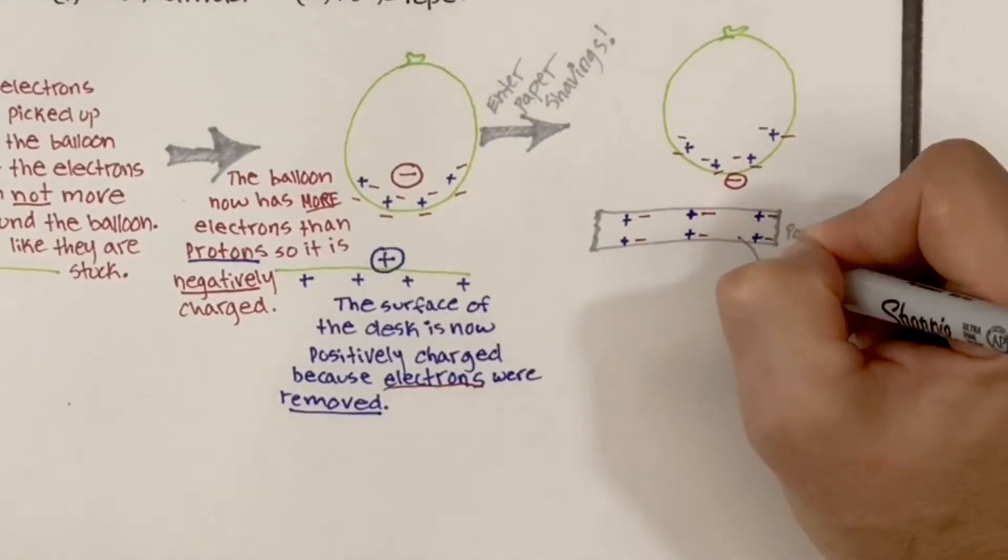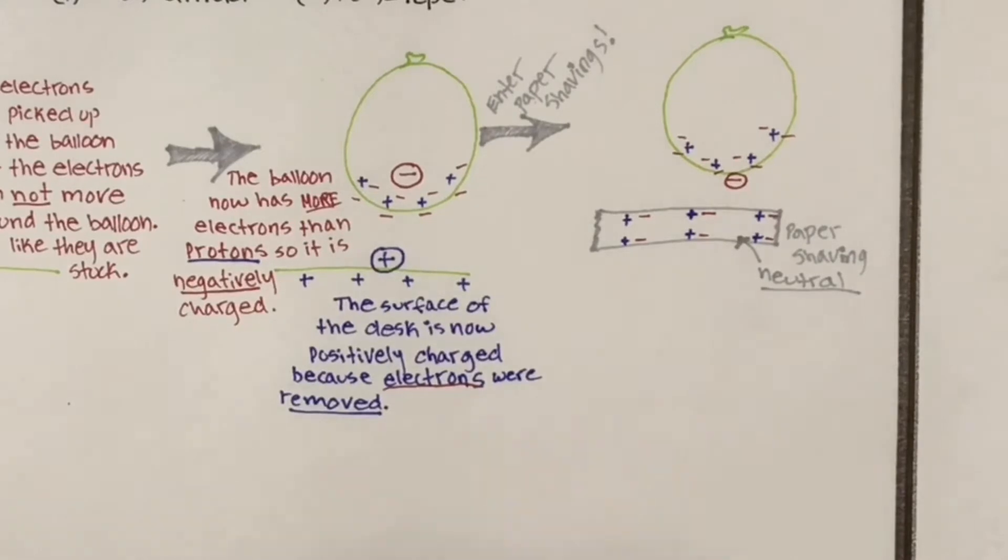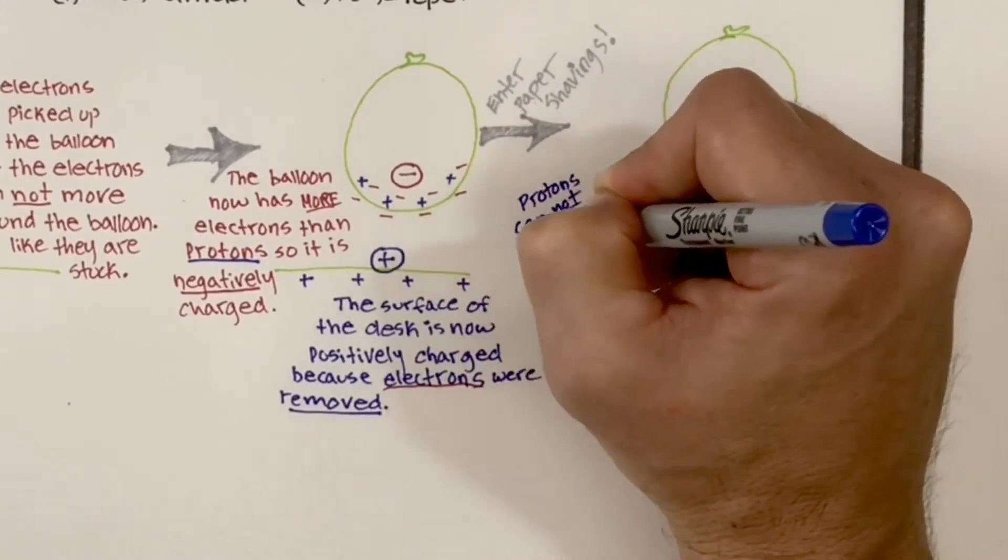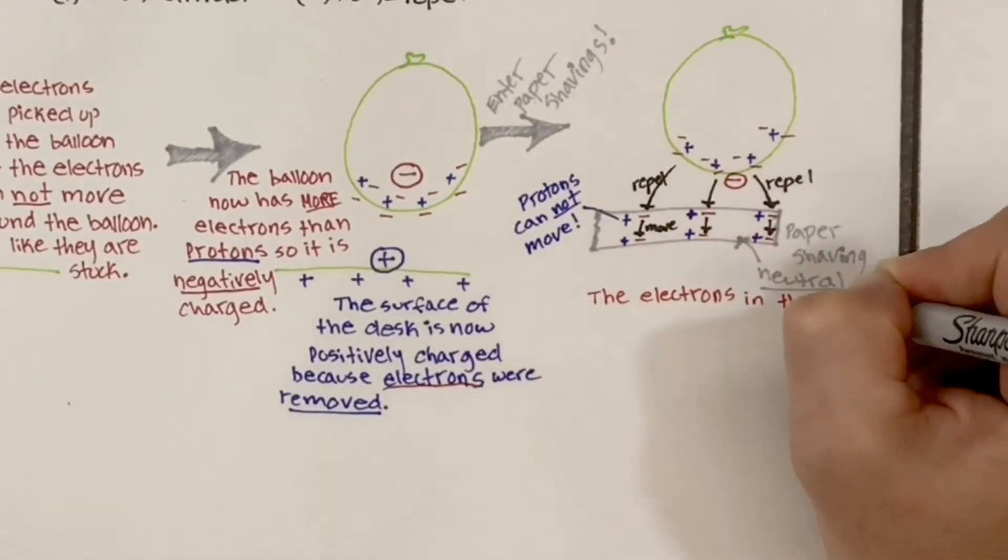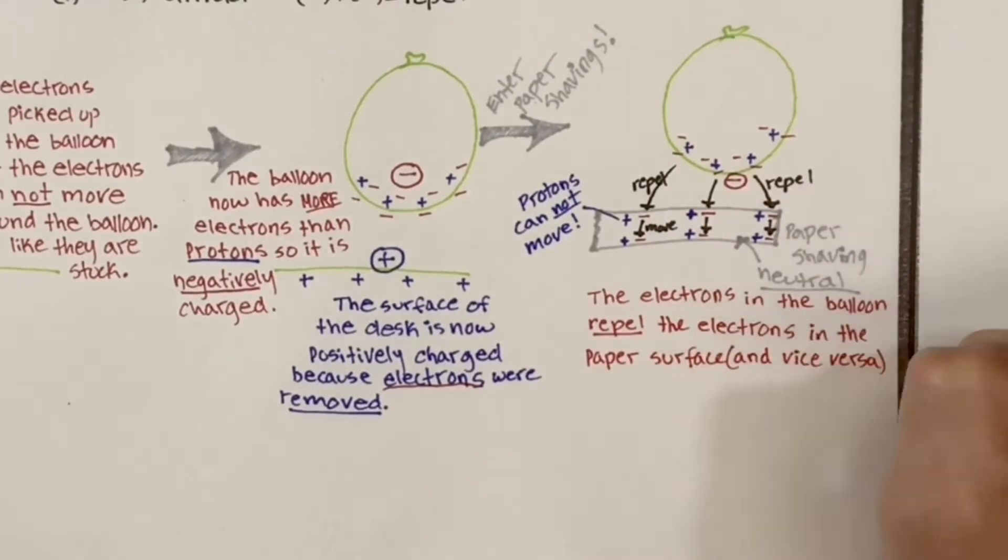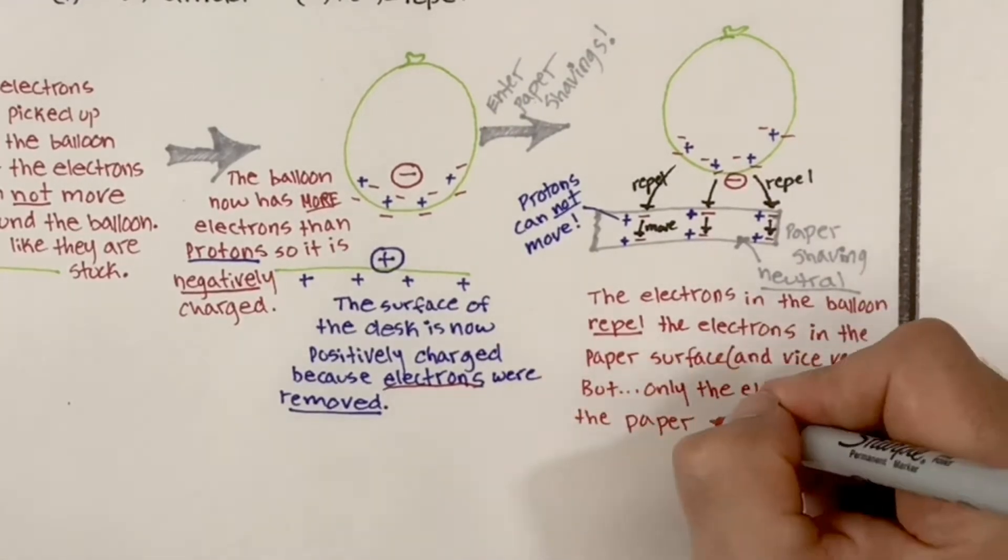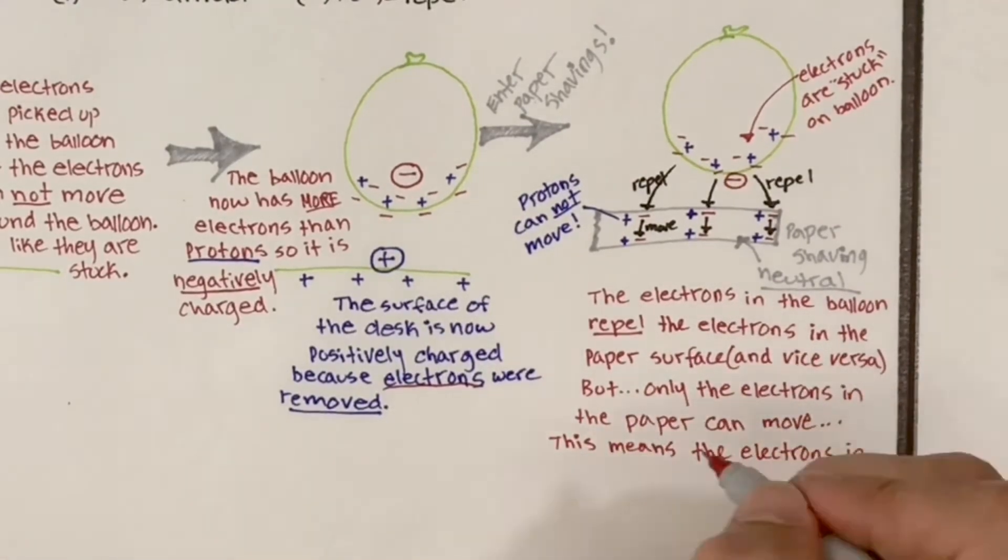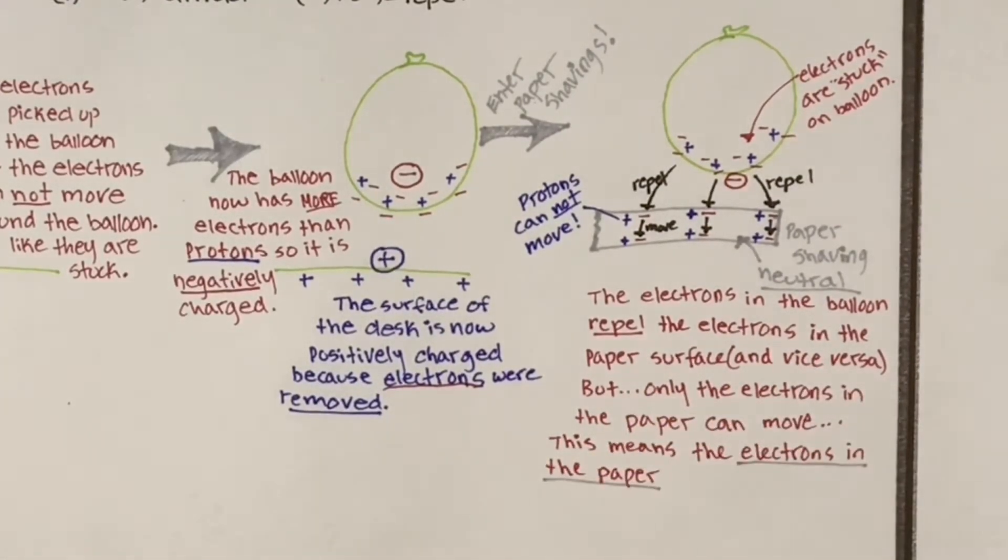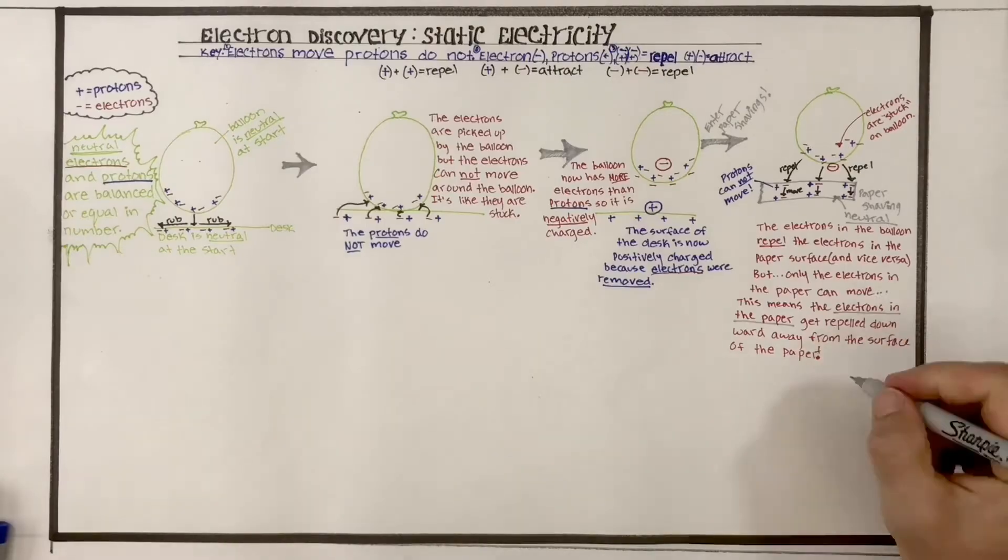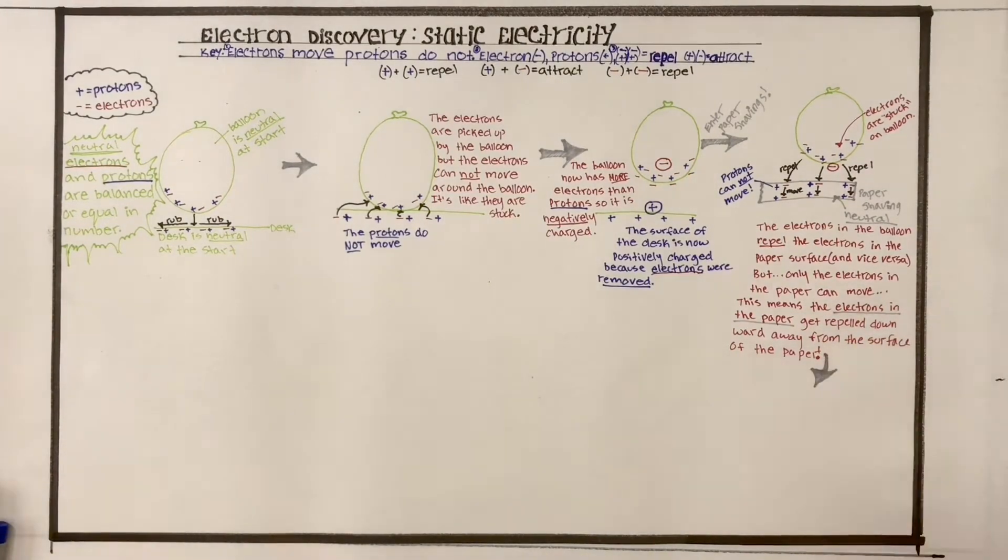So in our paper shavings, we draw our protons and electrons. It's neutral overall because there's equal amounts. But the negative electrons in the balloon repel those top electrons in the paper. But the protons can't move. So the electrons in the balloon repel the electrons in the paper surface and vice versa. But only the electrons in the paper can move because the electrons are stuck in that balloon. This means the electrons in the paper get repelled downward away from the surface of the paper. And that's going to lead to that jumping.